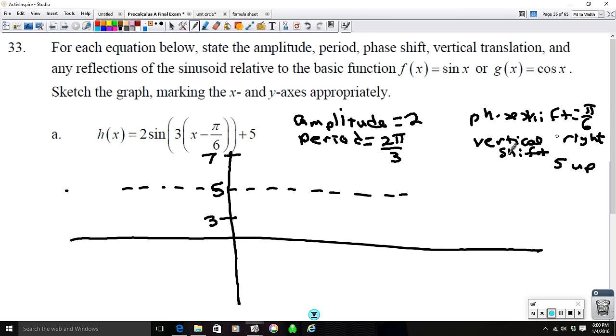Our phase shift is pi over 6 to the right, so this is going to start at pi over 6. And then the full period, again we know this is a sine function, so it's starting here. It's going to hit the maximum.